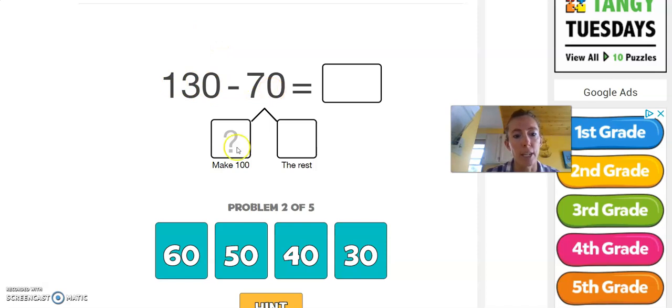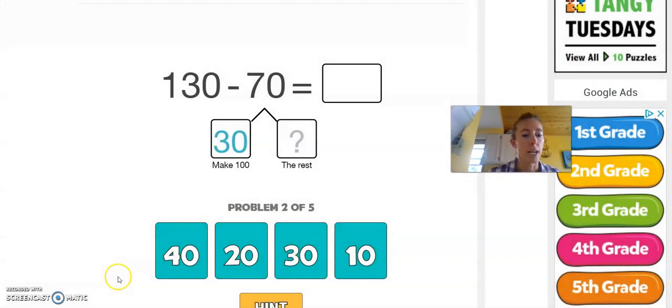130 minus 70. Man, if I could just make it back to 100, it would become easier. If I take off 30, I'll make it back to 100. But I need to take 70. What's nice is 70 is a multiple of 10: 10, 20, 30, 40, 50, 60, 70. If I take off 30, I'm left with 40. So 40 and 30 give me 70. I break it apart to make it easier.